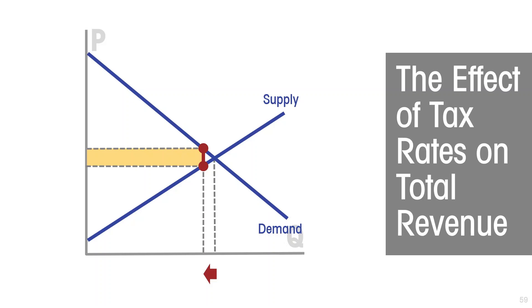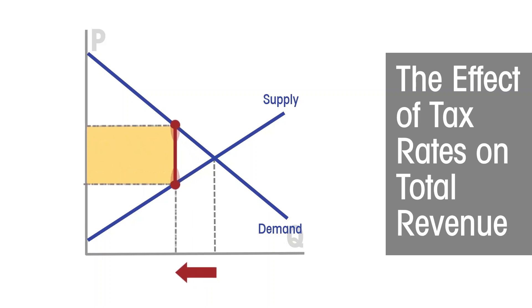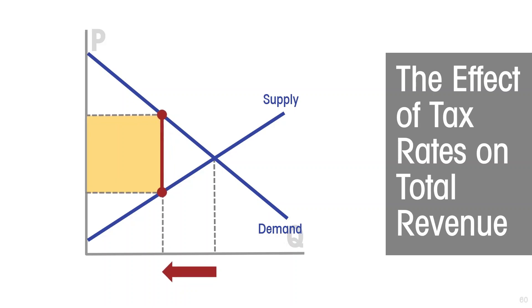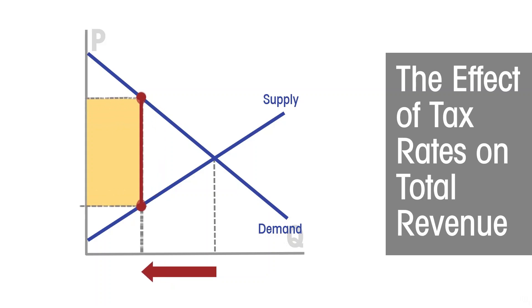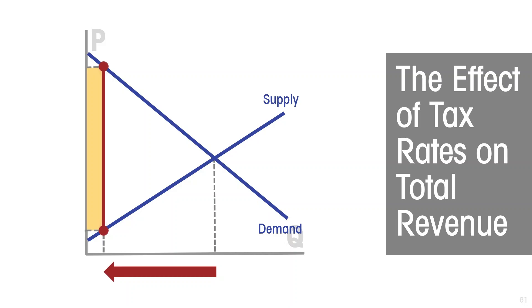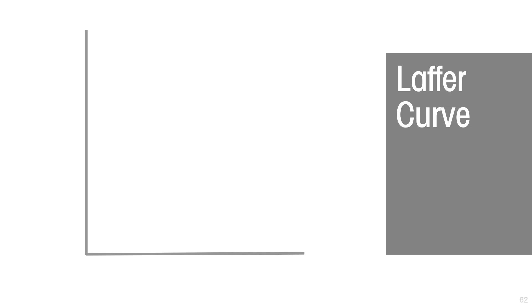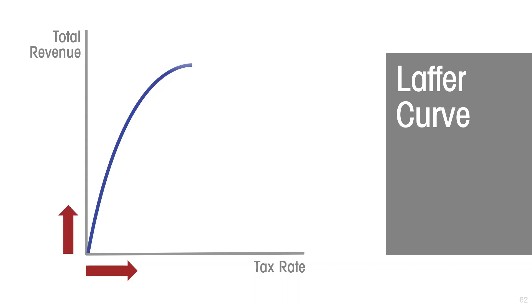We can see that if we start off with a small tax on this market, as we increase the tax rate, tax revenue likely rises. But there comes a point beyond which further increases in the tax rate shrink the total tax revenue, because the market gets so small that you are taxing a very small amount of activity. This relationship between the tax rate and tax revenue is captured in what is called a Laffer Curve, named after American economist Arthur Laffer. We put total tax revenue on the vertical axis and the average tax rate on the horizontal axis.